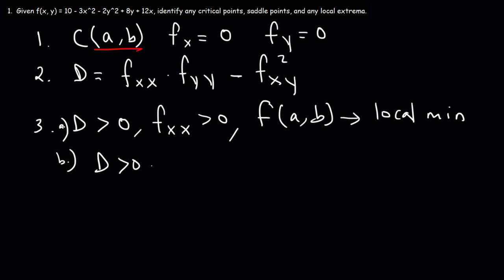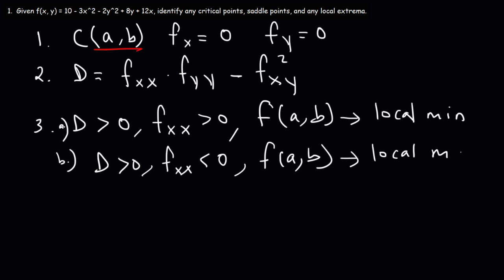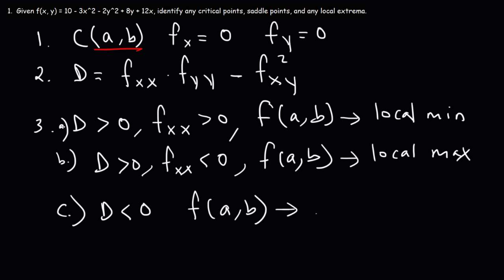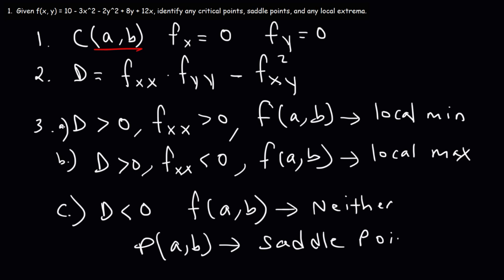Case two is if D is positive and the second partial derivative with respect to x is negative. In this case, f of a, b would represent a local maximum. In the third case, where D is negative, it really doesn't matter what the value of f double x is. If D is negative, then the function f of a, b is neither a local min nor a local max, but the point a, b will be a saddle point. Those are the steps we're going to take. Feel free to pause the video and write this down, as we'll be referring to it throughout the rest of this video.